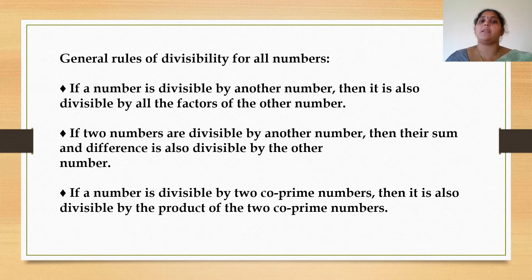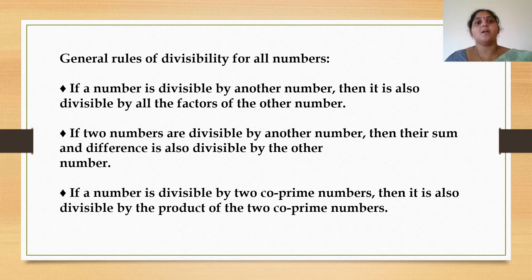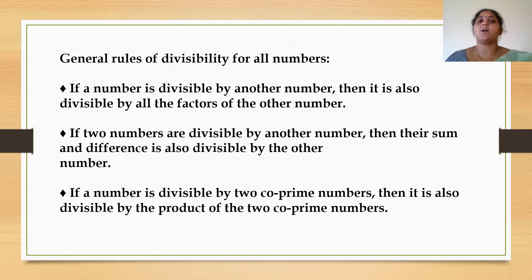Now, general rules of divisibility for all numbers. Rule 1: if a number is divisible by another number, then it is also divisible by all factors of that number. Rule 2: if two numbers are each divisible by another number, then their sum and difference are also divisible by that number. Rule 3: if a number is divisible by two co-prime numbers, then it is also divisible by the product of those two co-prime numbers.